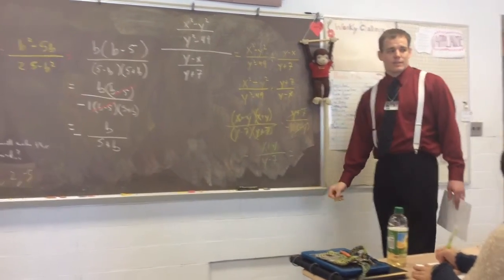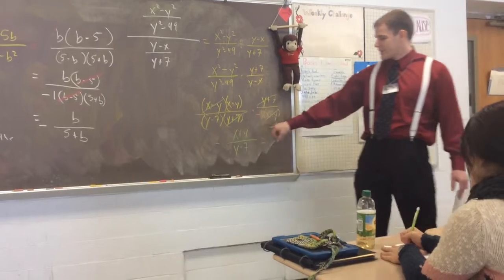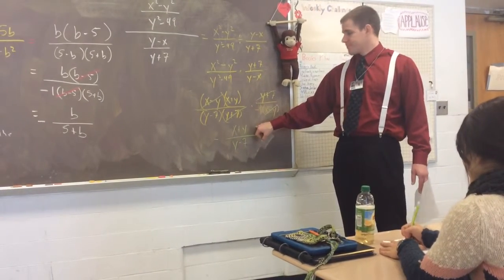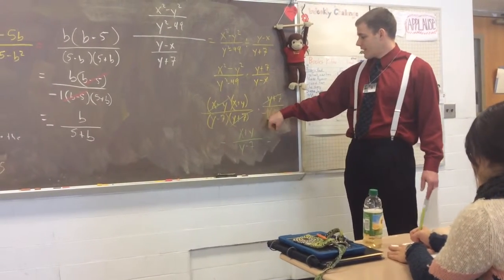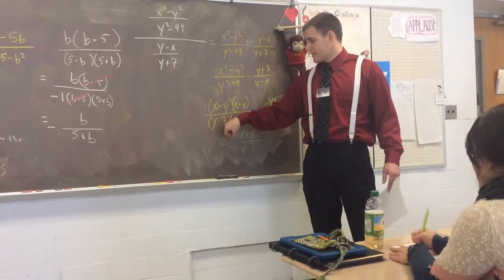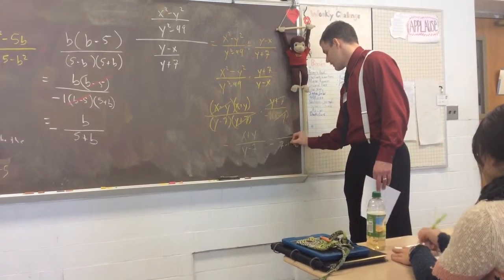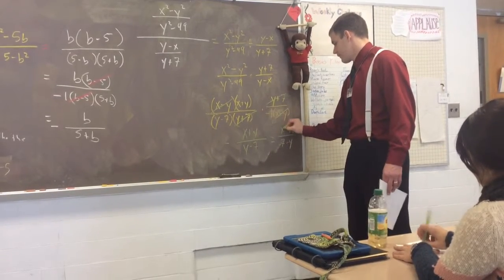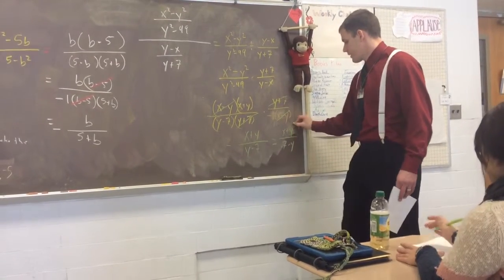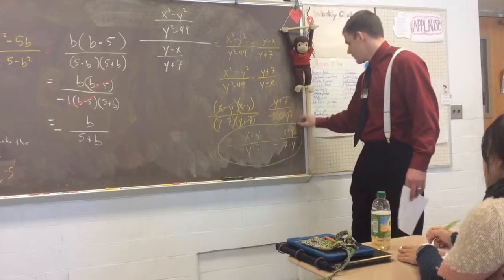X plus y over negative y minus 7. But, sometimes, you may get that answer, and the book may write it differently. The book may take negative 1 times y minus 7, and get 7 minus y on the bottom. These are both correct.